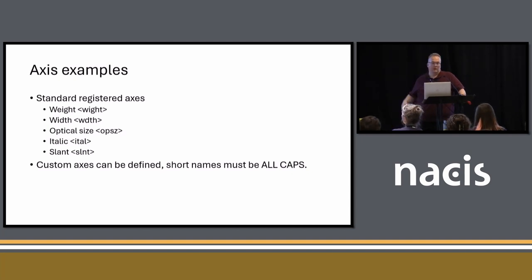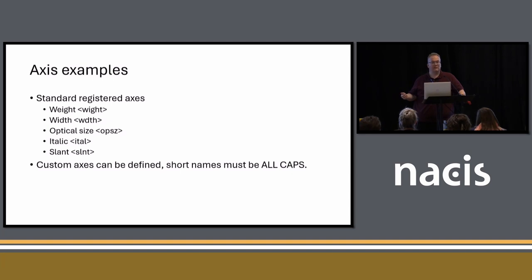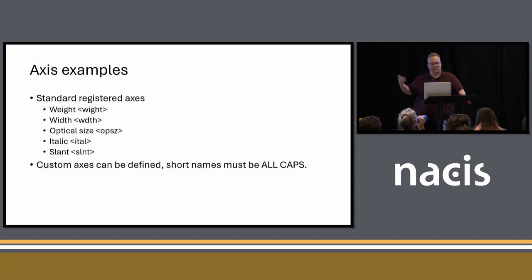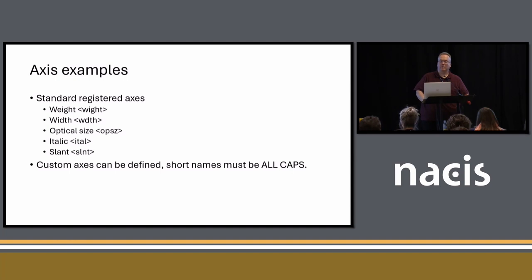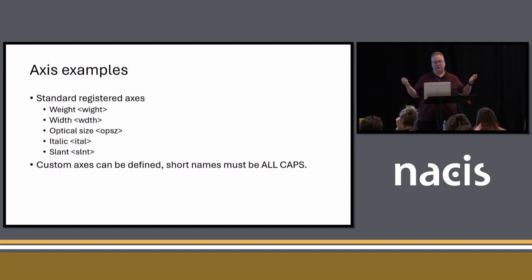The OpenType specification defines five registered axes: weight, width, optical size, italic, and slant. Weight and width are pretty self-explanatory. Optical size is a concept brought back from the metal type days — as type gets smaller, we actually have to drop detail because we couldn't print it, and now we're bringing that concept back into digital fonts. Italic in this sense is basically just a Boolean — either italic or not — and in practice it's not used that often. Slant is for creating oblique fonts, just taking the glyph and skewing it. Font designers can also create custom axes, and those use all-caps short names, since lowercase is reserved for future registered axes.